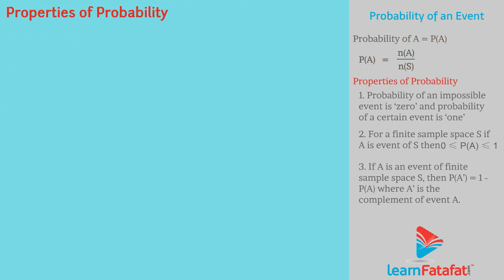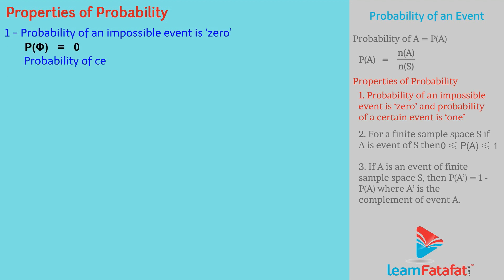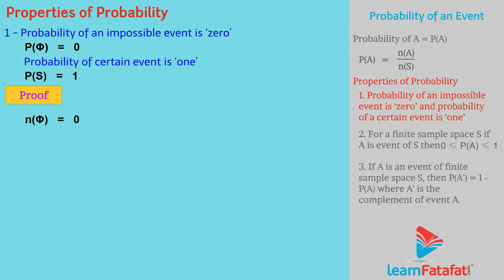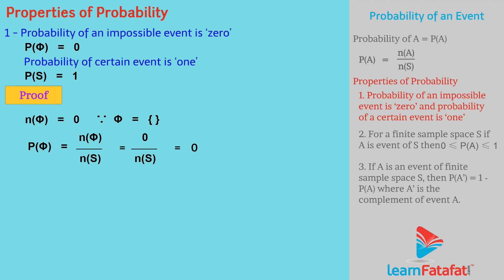Properties of probability. Probability of an impossible event is 0: probability of φ is equal to 0. And probability of a certain event is 1: probability of S is equal to 1. Proof: n(φ) is equal to 0, since φ is empty. Probability of φ is equal to n(φ) upon n(S) is equal to 0 upon n(S) is equal to 0. Similarly, probability of S is equal to n(S) upon n(S) is equal to 1.